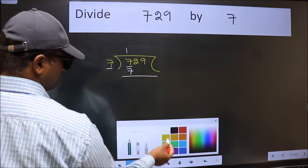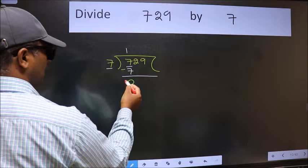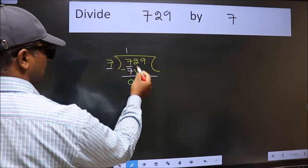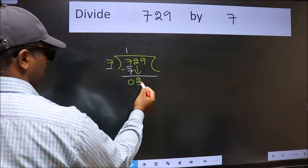Now we should subtract. We get 0. After this, bring down the beside number, so 2 down.